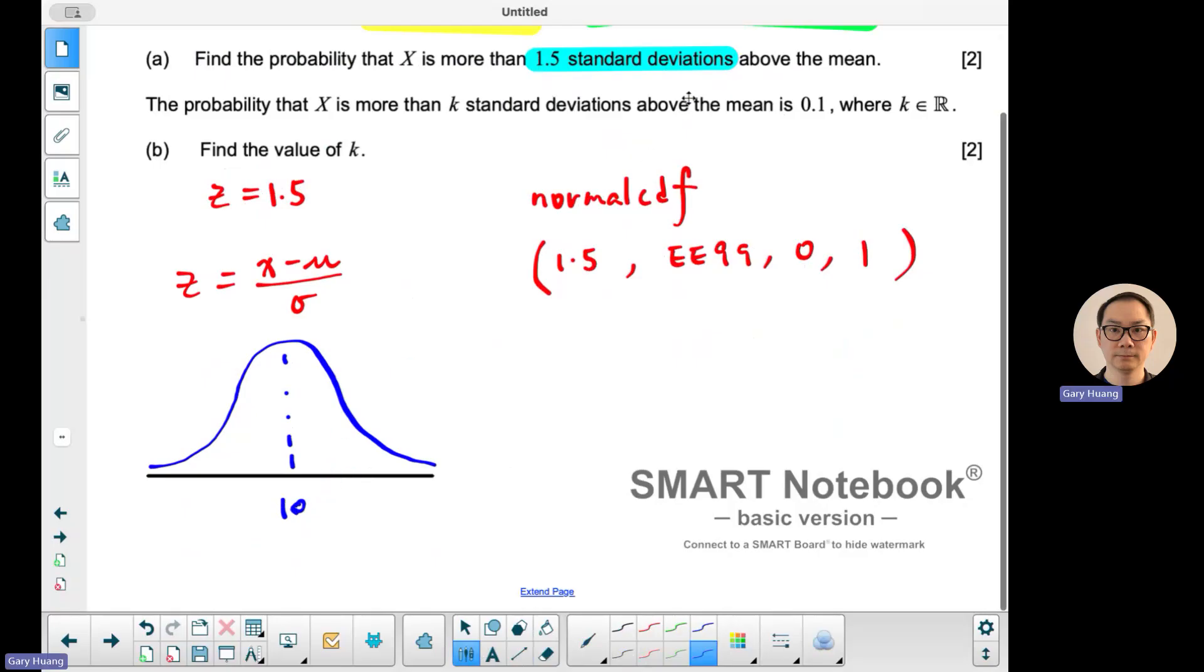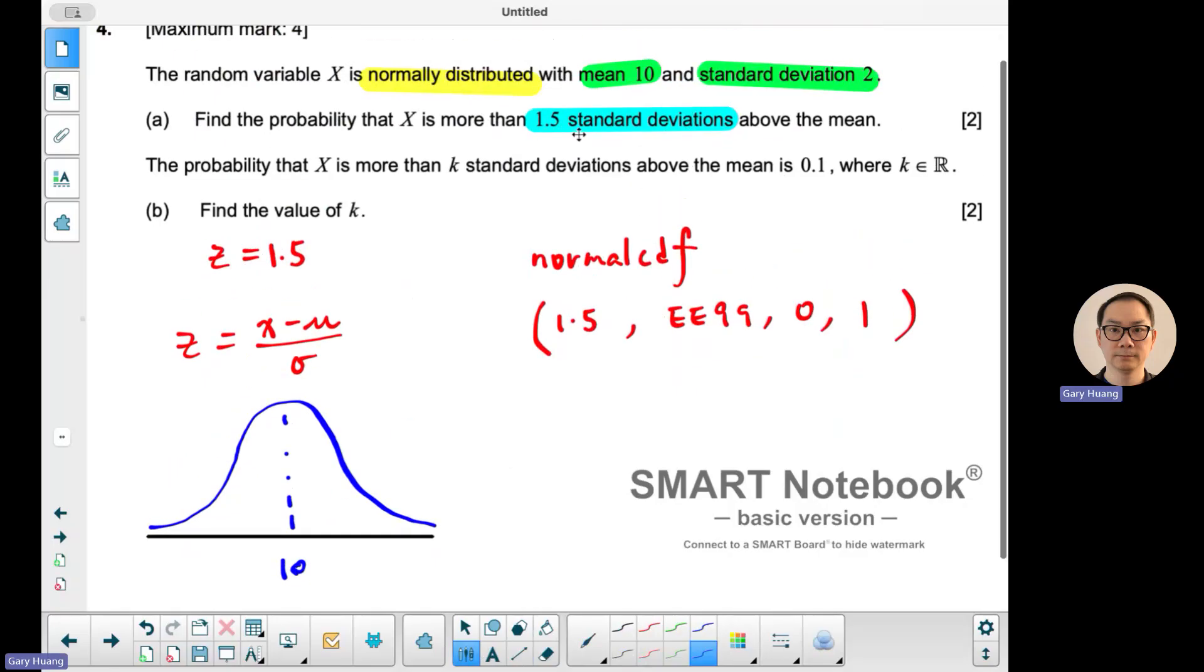This is 2. But 1.5 standard deviations away we're looking at the point 13. So we want to be greater than 13.